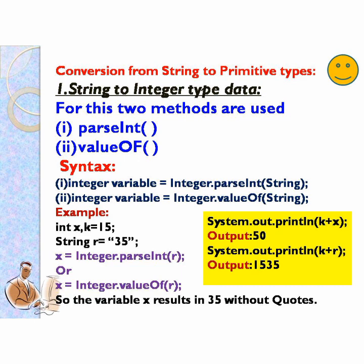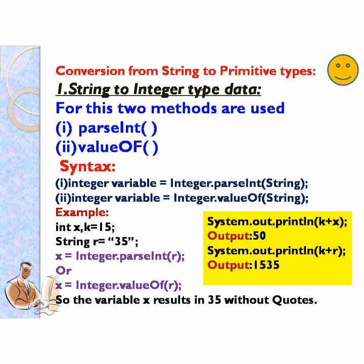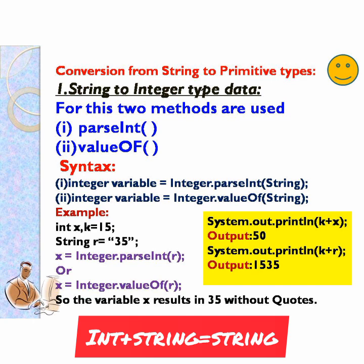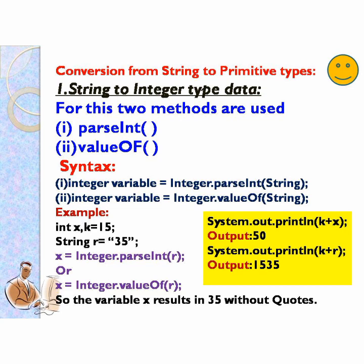The variable x results in 35 without quotes. Now, System.out.println(k + x): k is integer type with value 15, and x is integer type with value 35, so the output will be 50. But System.out.println(k + r): k is integer and r is string, so you will get string concatenation — the output is 1535.